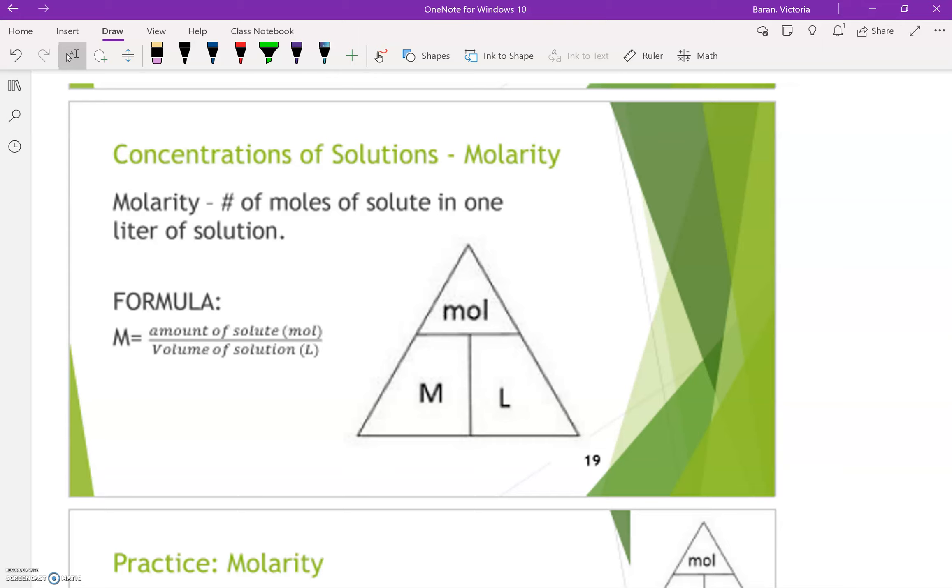You can use two different approaches. There's this formula here, which says molarity, which is big M, equals moles divided by liters. You can also use the triangle over here. So I'm just going to add in these little guys. This is how you can easily manipulate the triangle.